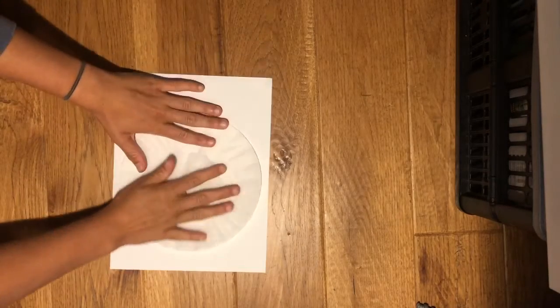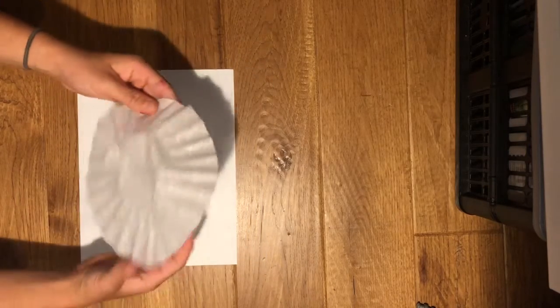Put a piece of paper under your coffee filter so you don't get marker on your floor. First, we are going to start off by grabbing our coffee filter, flattening it out, and then flipping it over to flatten it on the other side.